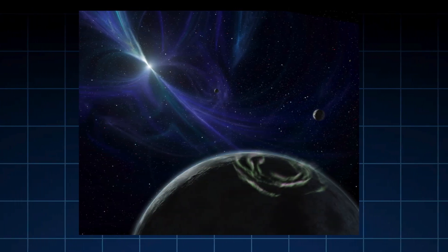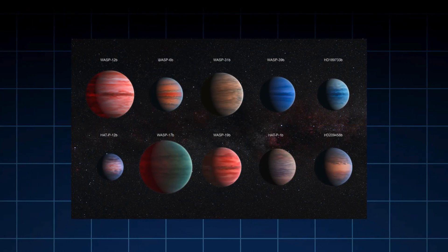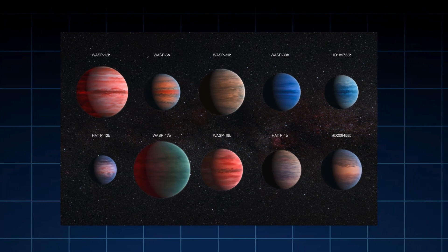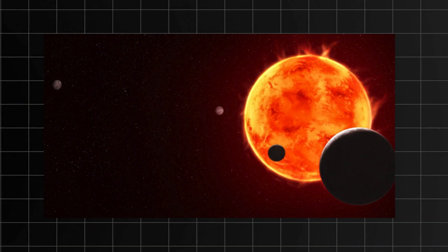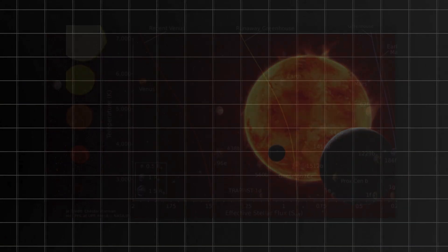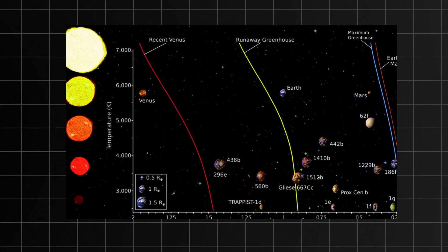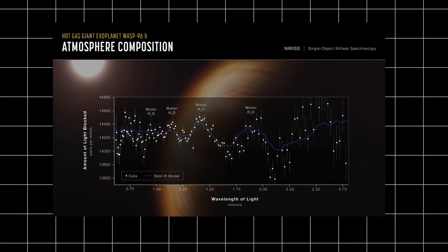Taken collectively, these observations dismantle the rigid habitable zone. For years, potential was confined to a narrow band where surface water might flow. Webb reveals atmospheres enduring inside and outside that ring, chemistry flourishing in heat or cold, resilience triumphing over hostility. Habitability emerges not as a fixed location but as a continuum, where energy sources—stellar, tidal, geothermal—intersect with time to foster complexity.